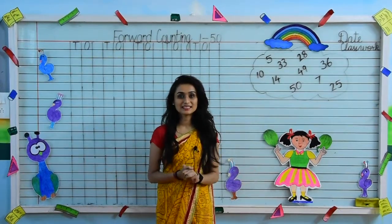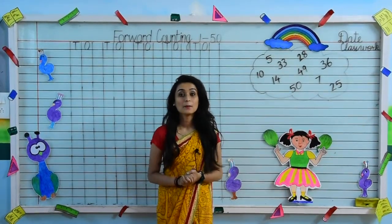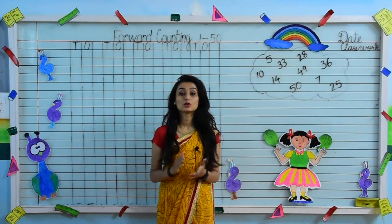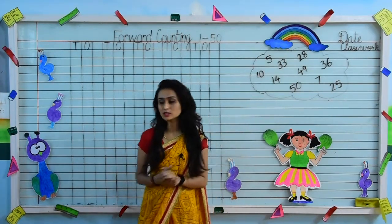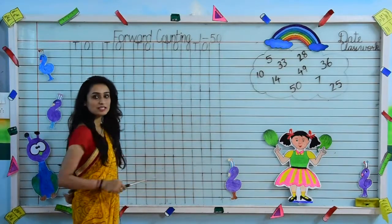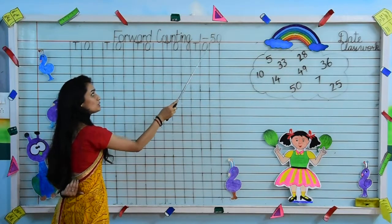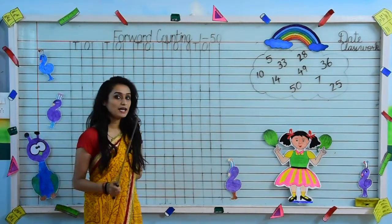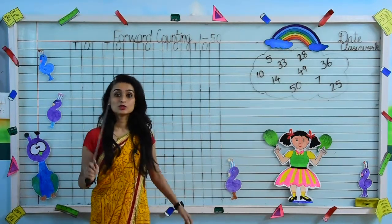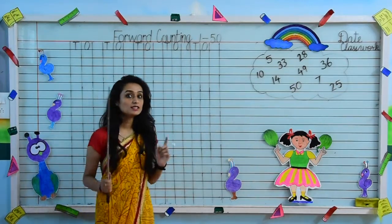A very warm morning, my dear kids. How are you all? I hope you all are doing well. Myself Shubhangi Shukla from Shivjyoti Educational Group, Kota. So kids, today we are going to write forward counting 1 to 50. So get ready.